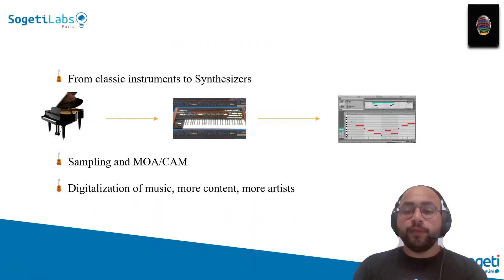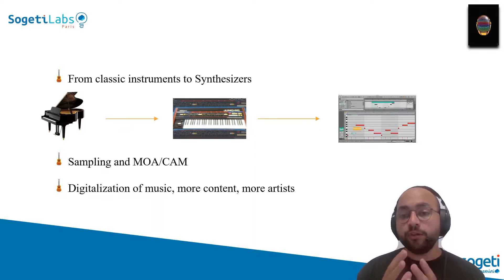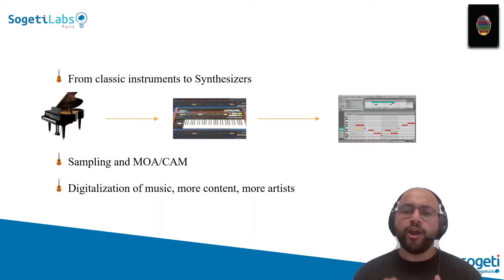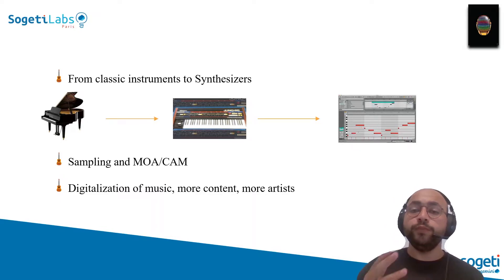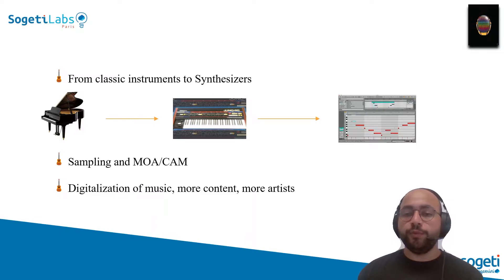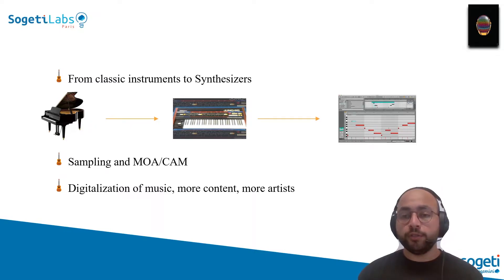We moved from classical physical instruments — like piano, guitar, saxophone — that were played by a musician who needed a lot of practice and knowledge, to synthesizers and more analogical, electrical instruments. Then we moved to sampling and using computers to manipulate music, generate new samples, and generate new music using different software. You can think today about auto-tune to process human voice, and software like Fruity Loops to generate different music samples of different instruments.